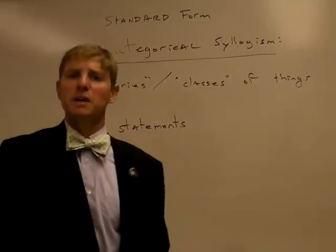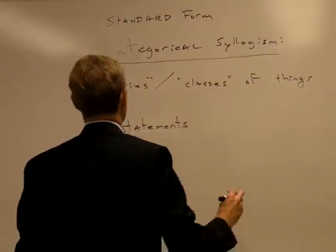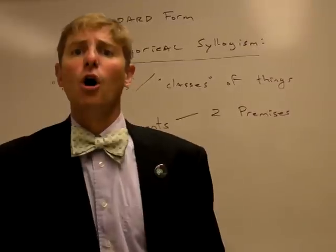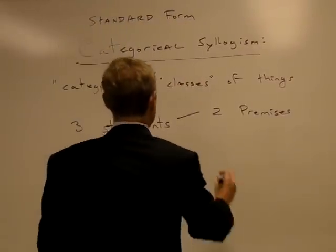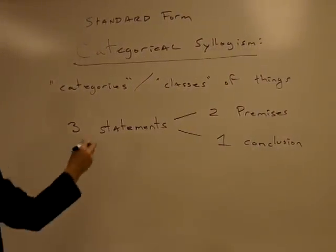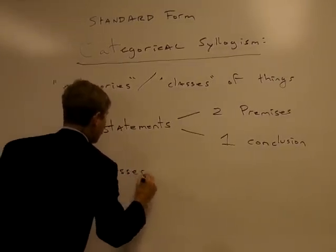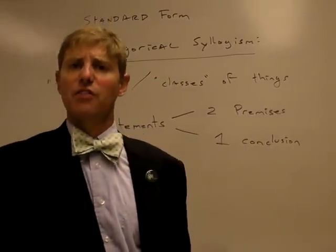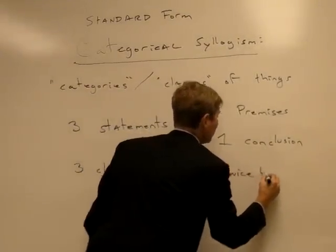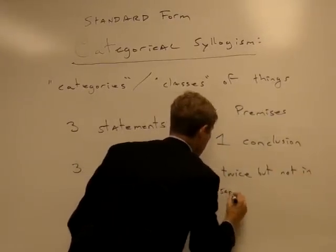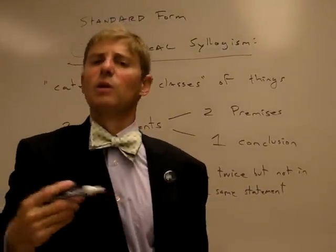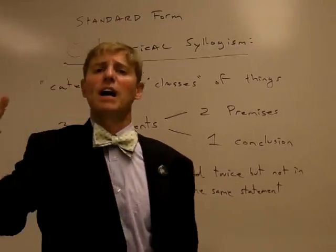Recall that these statements must be of either the form A, E, I, or O. Two will be premises — recall from earlier discussion that premises are the statements that support a conclusion. So two of the statements will be premises and one will be the conclusion. They will relate three classes or categories of things. Each class or category will be mentioned twice, but not in the same statement.